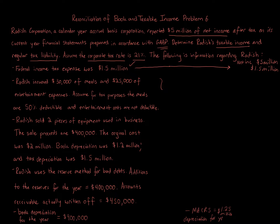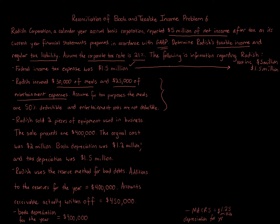The next item is meals and entertainment. For financial accounting purposes, the full amount is deductible — $30,000 of meals and $25,000 of entertainment, totaling $55,000. For tax purposes, meals are 50% deductible and entertainment costs are not deductible at all.